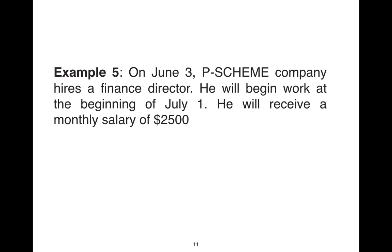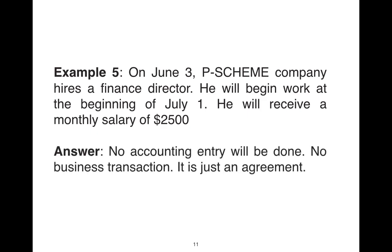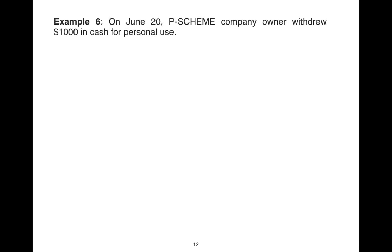In example five, Peace Scheme Company hired a financial director on the 3rd of June. The financial director will start his job at the beginning of July and will receive a monthly salary of $2,500. The answer is there will be no accounting entries, because no business transaction happened. It is just an agreement between the company and the financial director to enter into a business transaction that begins on the 1st of July.